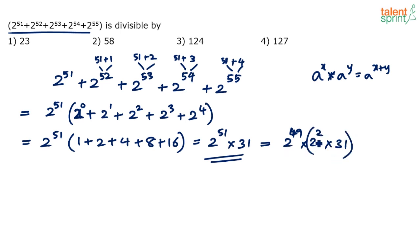Now look at this: 2 squared is 4. 4 times 31 is 124. So this number can be expressed as 2 power 49 into 124. That's it! 124 is there in the option, so I can say that is divisible by 124.